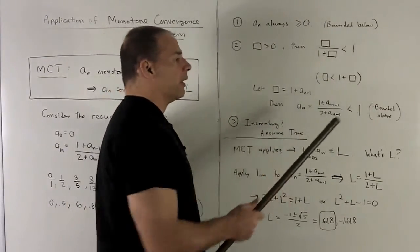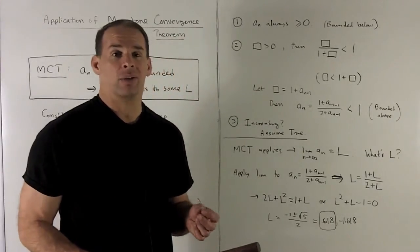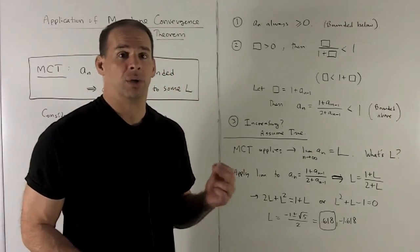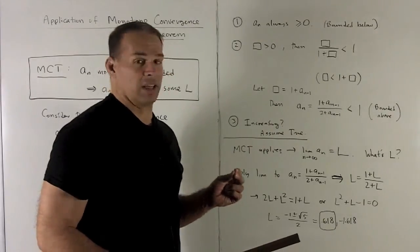So we're bounded below, we're bounded above, so we have bounded. We have bounded and monotonic. Monotone convergence theorem says this sequence has a limit.